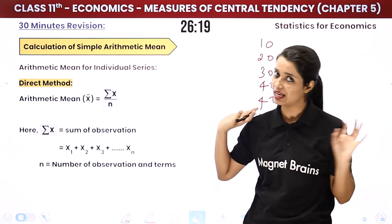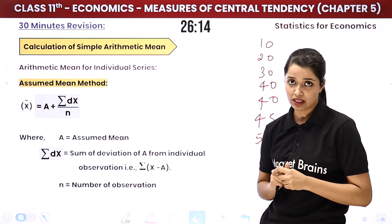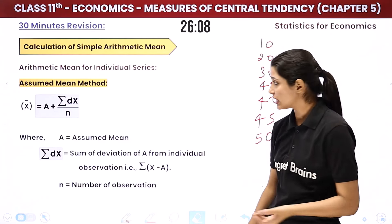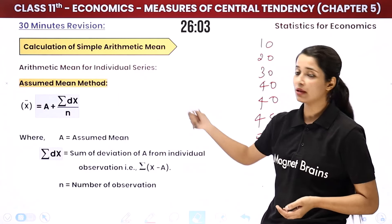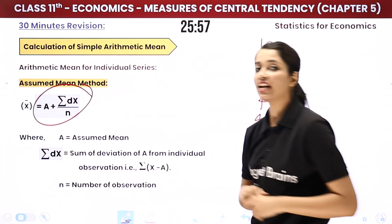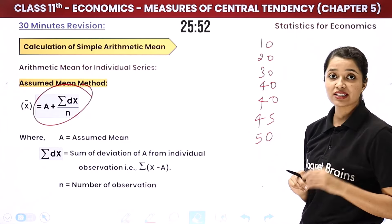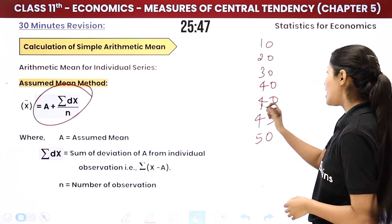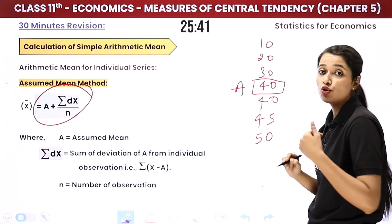We have various methods: direct method, assumed mean method, and step deviation method. The direct method we just saw. Now for the assumed mean method, the formula is: A plus Summation of dX divided by N. Here A is the assumed mean, and dX represents the deviations from the assumed mean.